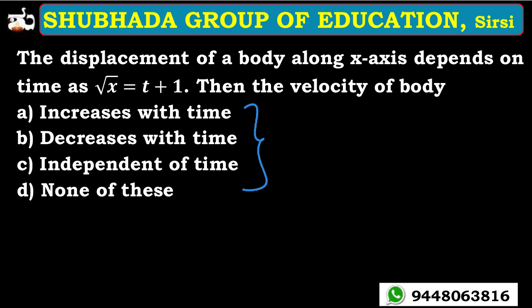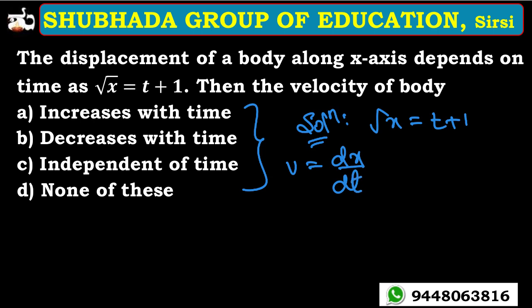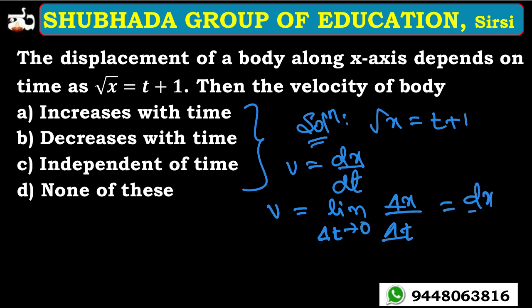Now, this is the second problem with the equation √x = t + 1, and we need to find the displacement and velocity. Average velocity equals the limit of change in displacement divided by change in time as time approaches zero, which equals dx/dt. On the basis of this concept, differentiate with respect to time t. √x = t + 1.